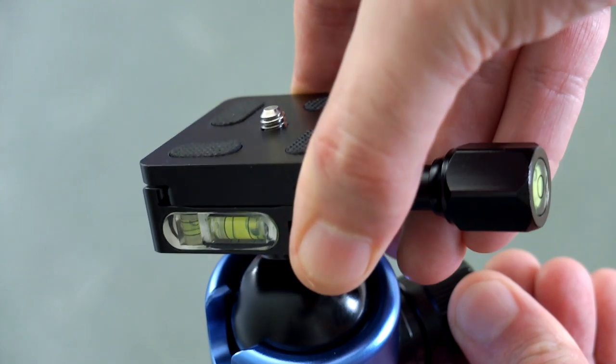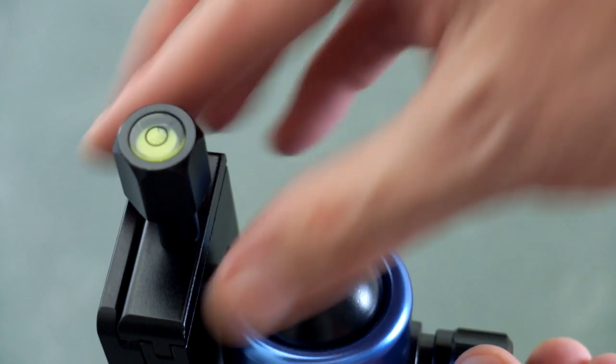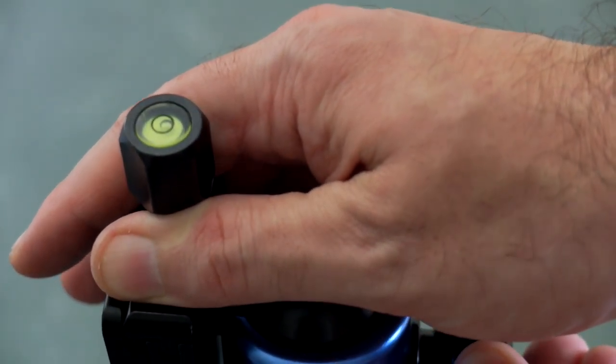And when I turn it around here, you'll notice that we have another spirit level on the edge of the knob here. So if you have the head in a different position, you can also align it correctly. Three in total, so that should cover every conceivable angle that you'll have.